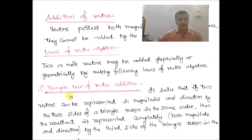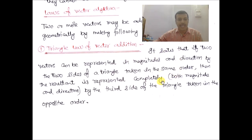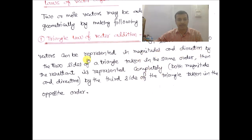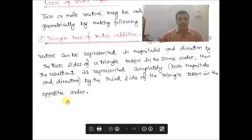The triangle law states that if two vectors can be represented in magnitude and direction by two sides of a triangle taken in the same order, then their resultant is represented in magnitude and direction by the third side of the triangle taken in the opposite order.